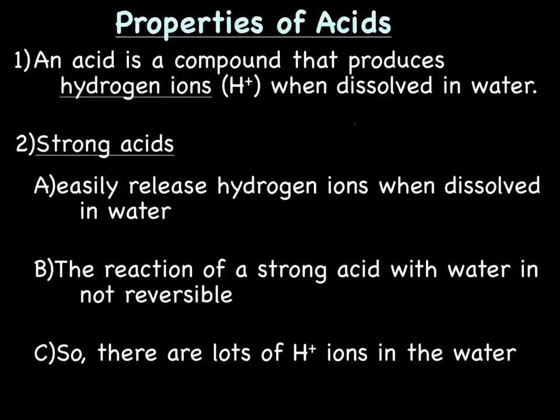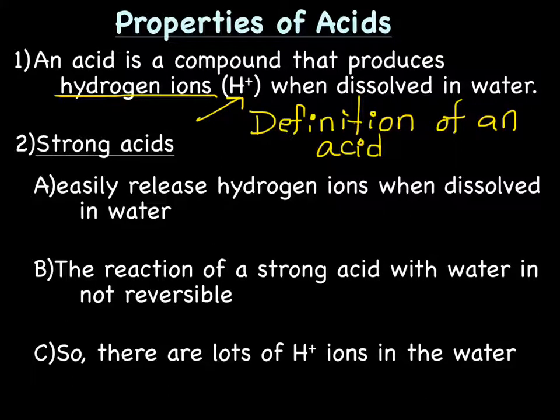Let's start with the discussion of acids, so properties of acids. An acid is a compound that produces hydrogen ions or H1 plus when dissolved in water. This is the definition of an acid. That's important. You need to know that.